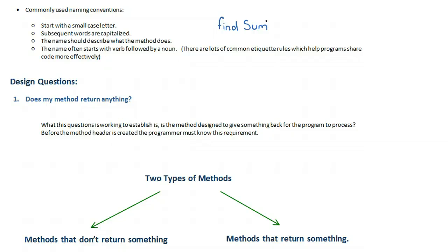Remember classes have lots of methods and there's no way to memorize them all but if you design your class such that methods have understandable names then someone using it can easily find those methods. Finally names often start with a verb followed by a noun. There are lots of common etiquette rules which help programmers share code more effectively. These are just a couple of them. There's lots of idiosyncrasies that kind of pop up as you program more but we won't get into those in this video. We'll have a video about some other kind of more fine detailed rules a little later on.